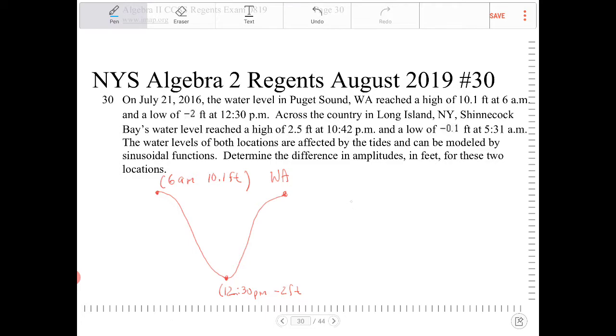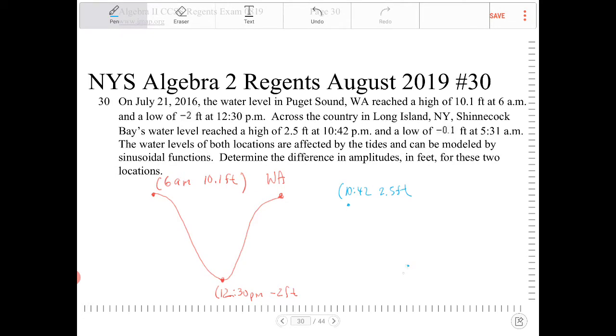So over here, we have 10:42 at 2.5 feet, and a low of negative 0.1 feet at 5:31 a.m. And this was p.m. before,